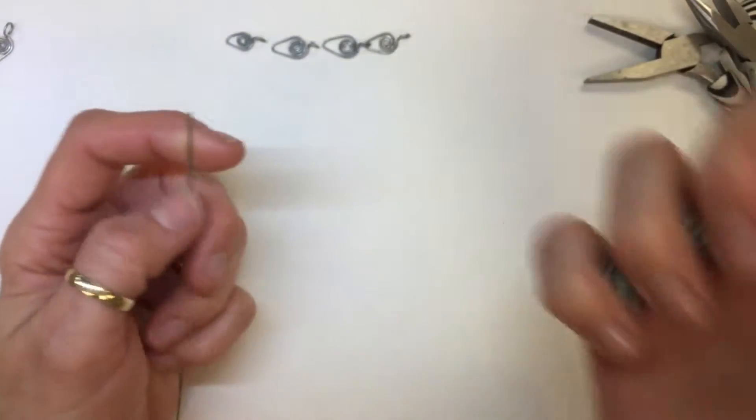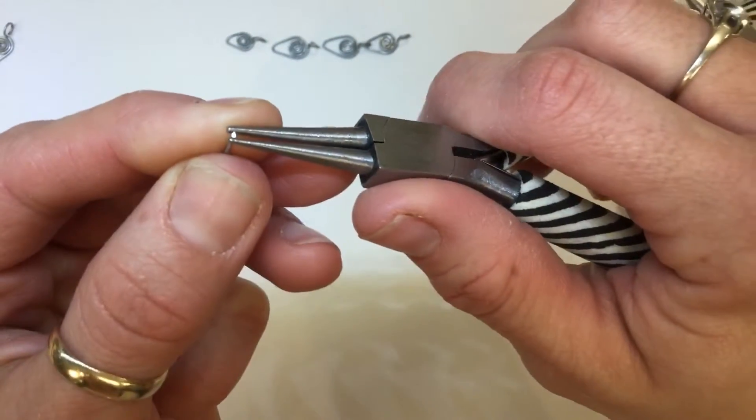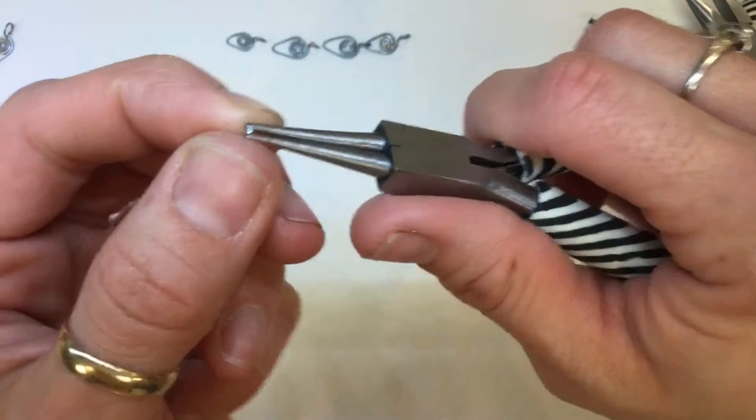First you'll need your round nose pliers and we're starting off with the spiral. Use the small part of your pliers, as close to the end of the wire as possible.